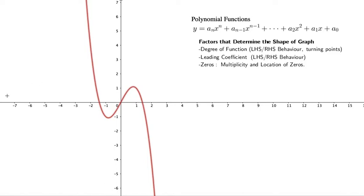So the left-hand side behavior is determined by the leading coefficient as well. The leading coefficient simply is the number in front of the largest exponent. Another thing that we're going to be taking a look at, really important, is the zeros.